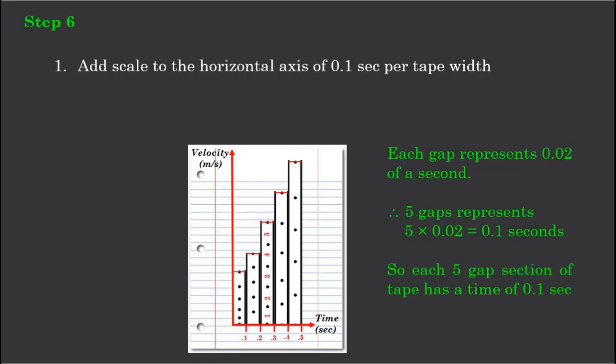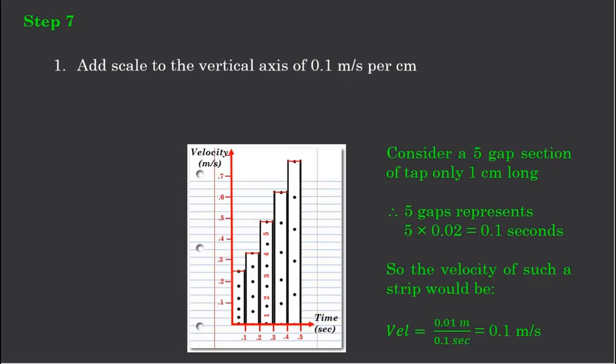That's the horizontal axis going across in 0.1 of a second for every division of tape. On the vertical axis, let's say we have a section of paper that's only 1 centimetre tall. This 1 centimetre section has got 5 divisions, each of 0.02 of a second.